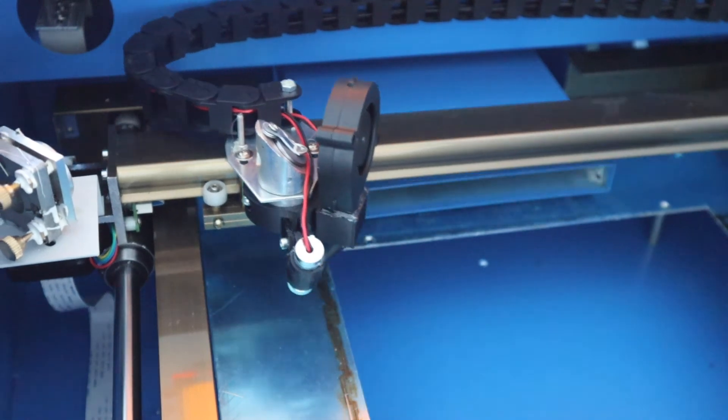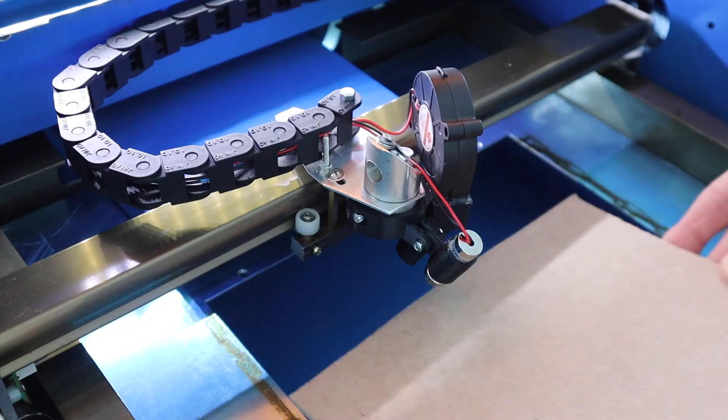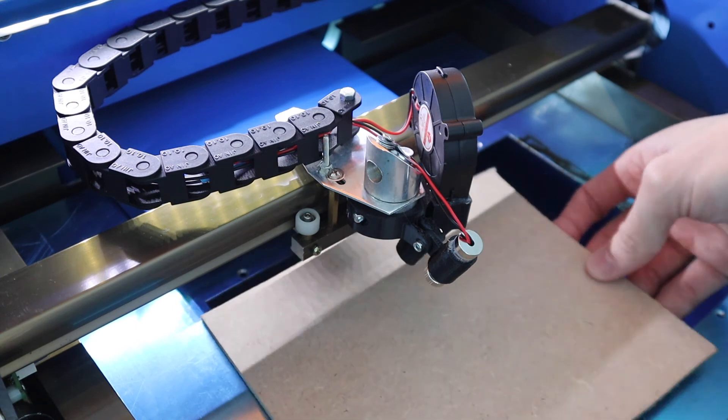Now that all the wiring is done, let's turn it on and try it out. Put a piece of wood, cardboard, or acrylic into the cutting area.